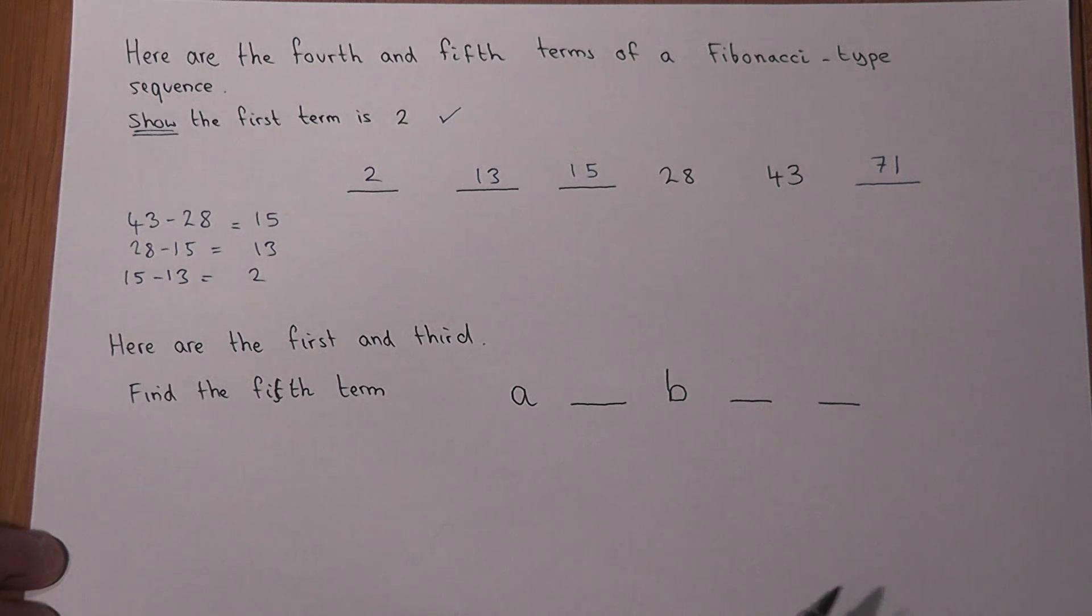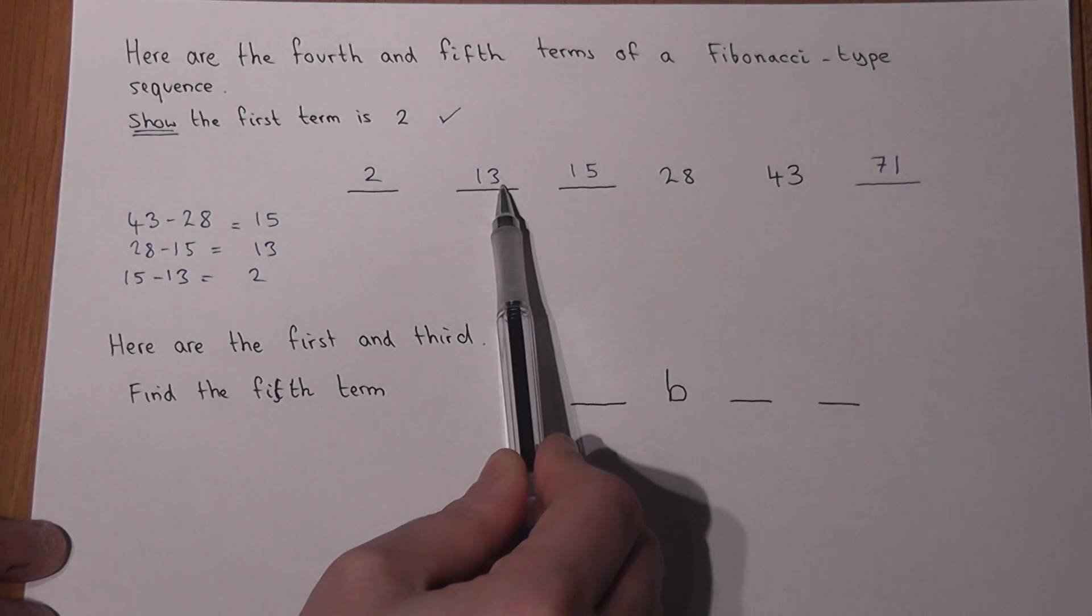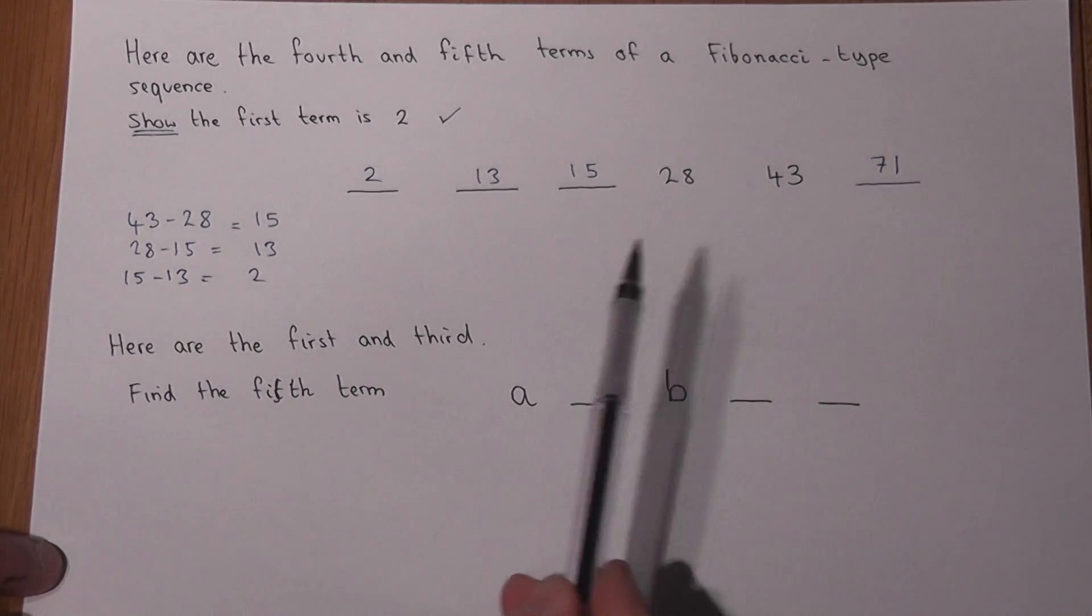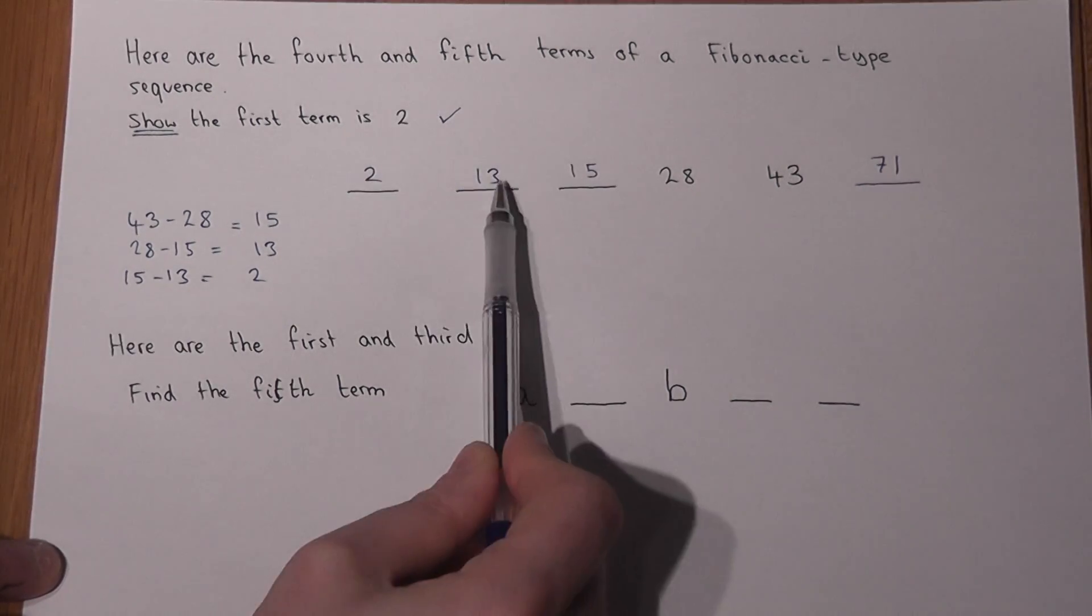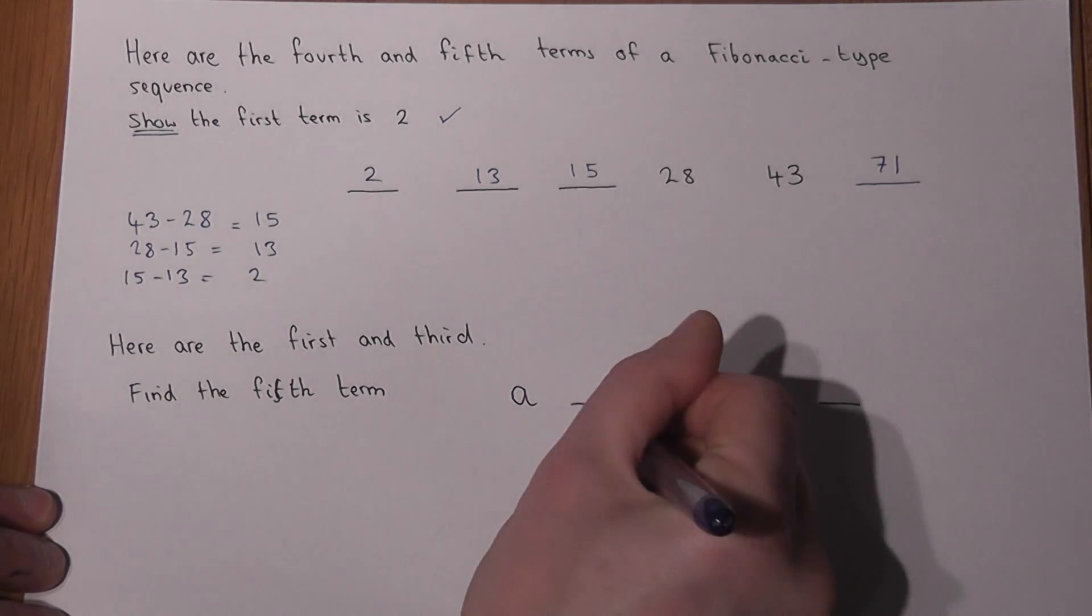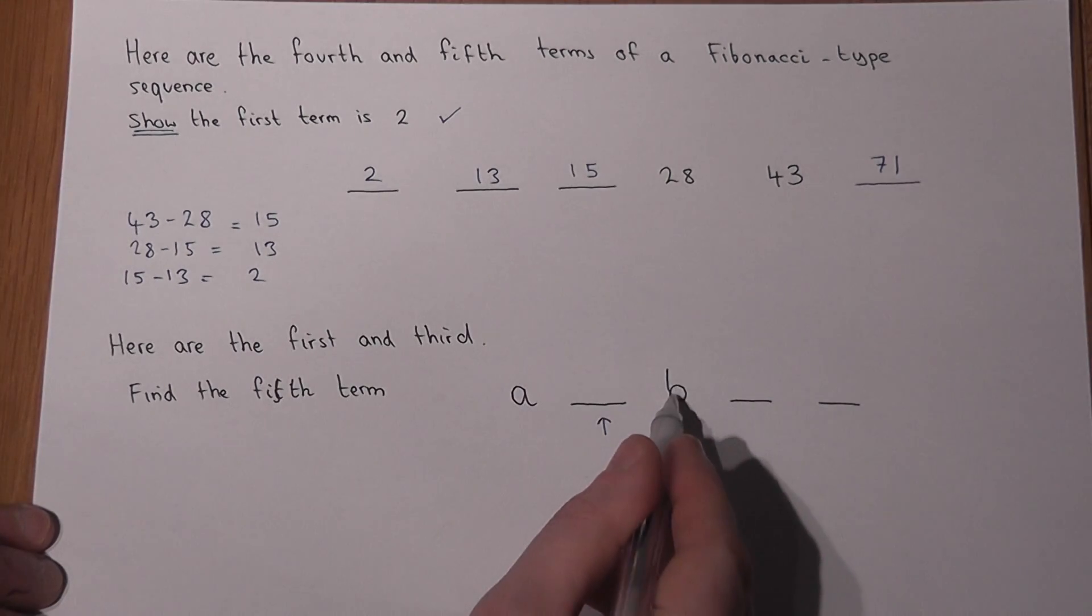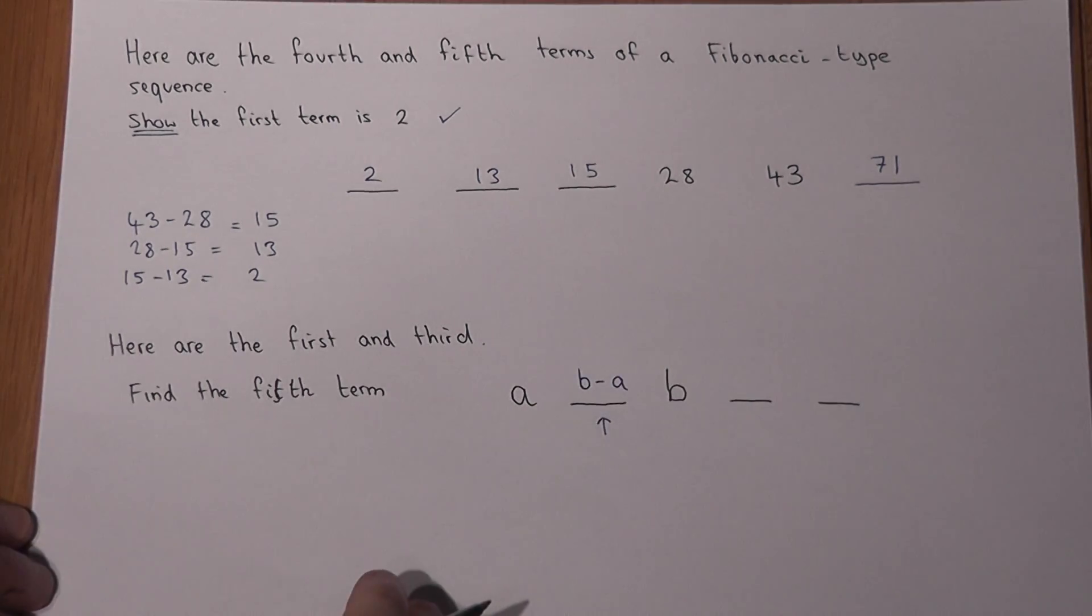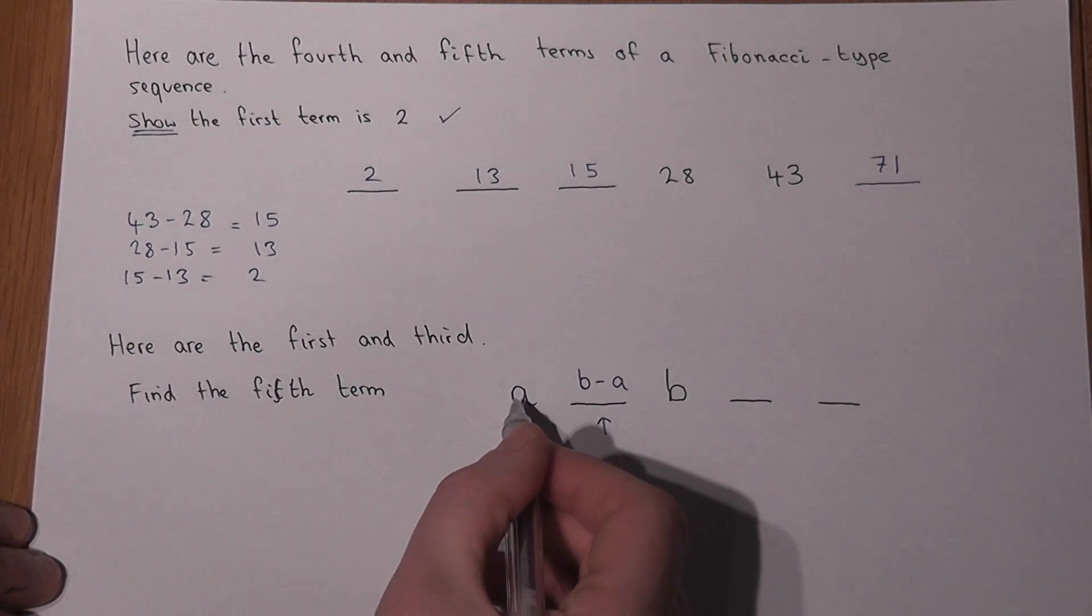Now just as before, we showed how if, for example, you knew the third and second, then 15 take away 13 equals 2. In a similar way, if I know the third and the first, 15 take away 2 equals 13. So in this question I could find, for example, the second term by not doing 15 take away 2, but by doing B take away A. So I could write in B take away A in here. The second term is the third term minus the first term.